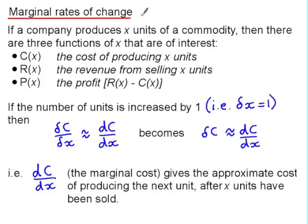Marginal rates of change concern the cost or revenue or profit of increasing the number of units by 1. So if we have x units of a commodity being produced and we increase the number of units by 1, in other words delta x our small change is 1, then delta c over delta x approximately equal to dc by dx becomes delta c because of that delta x equaling 1.